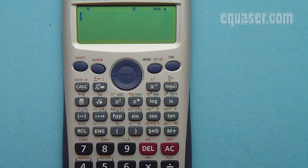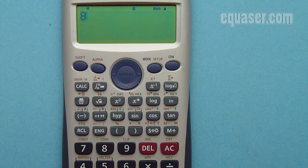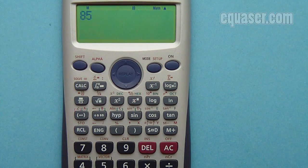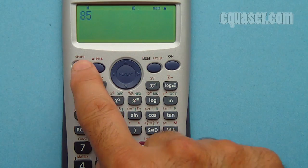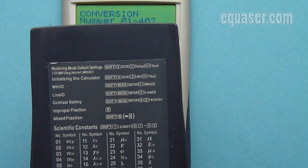In this case, let's assume that we have 85 centimeters. I want to convert it to inches. I press shift and convert. In this case, as you can see here, 02 is for centimeters, so I press 02.